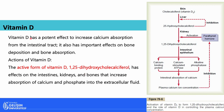Vitamin D has a potent effect to increase calcium absorption from our small intestines. In addition to that, it also plays an important role in bone deposition and bone absorption. The active form of vitamin D is 1,25-dihydroxycholecalciferol. It has effects on the intestines, kidneys, and bones, which allow for the increase of absorption of calcium and phosphates into the extracellular fluid.